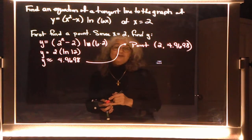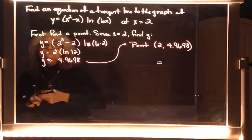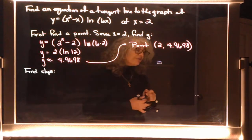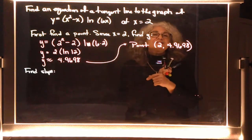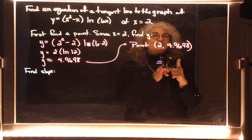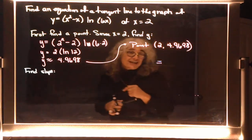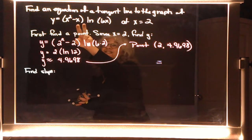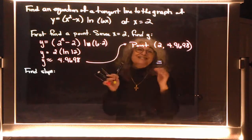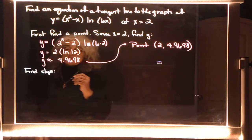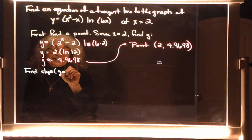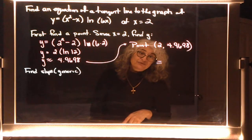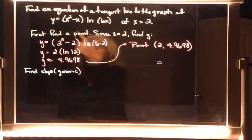Now we also need the slope. Since it's a tangent line, to find the slope we take the derivative of the function — that gives the generic slope equation. So find y prime.